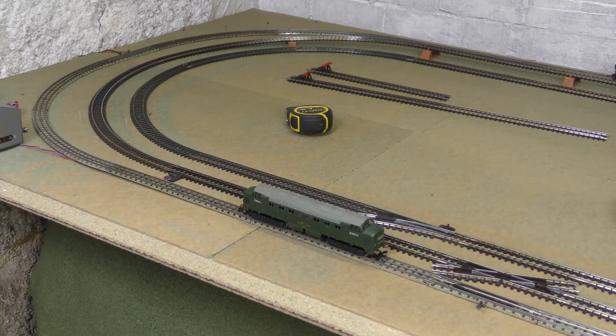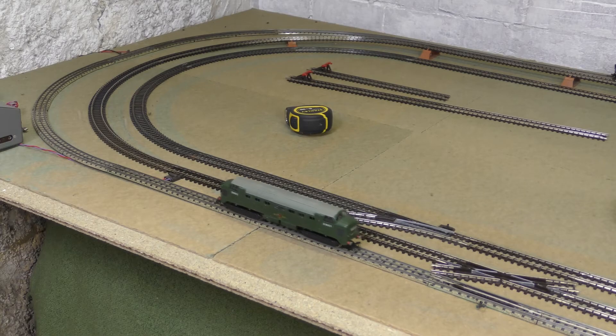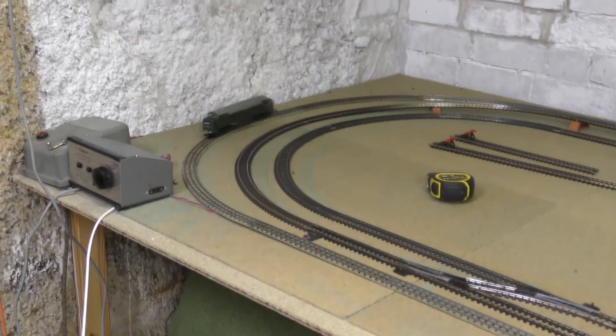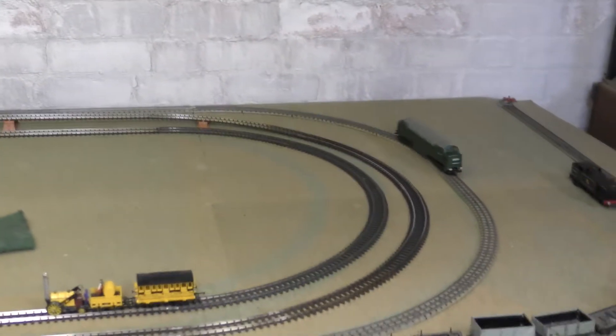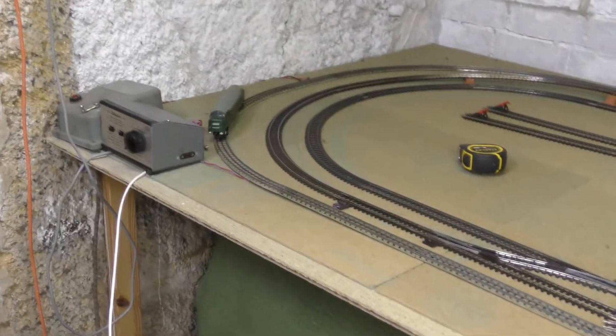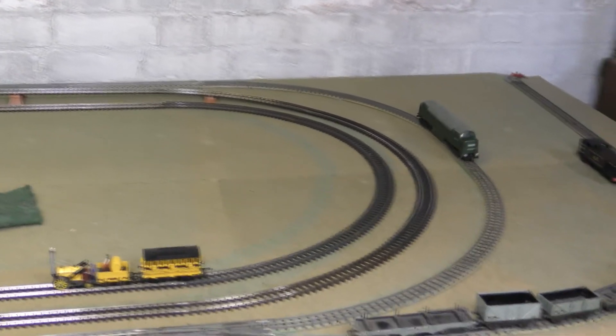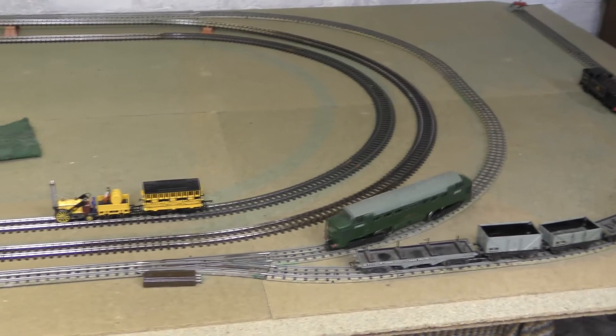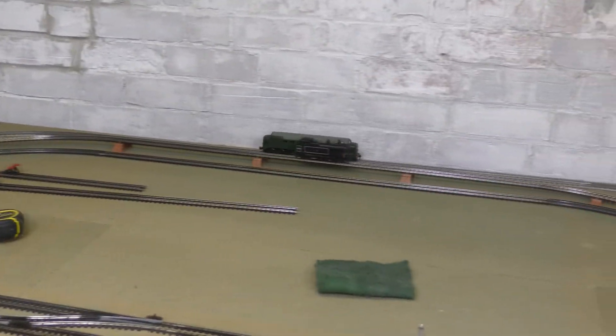Okay, the model is now on the track, so we're going to do a little bit of test running. So I'm just going to start it moving - nice slow start - and away we go. It seems to be running quite nicely with the new traction tires on. Just run it around a couple of times and then we'll get some wagons. They do perform really well, these.